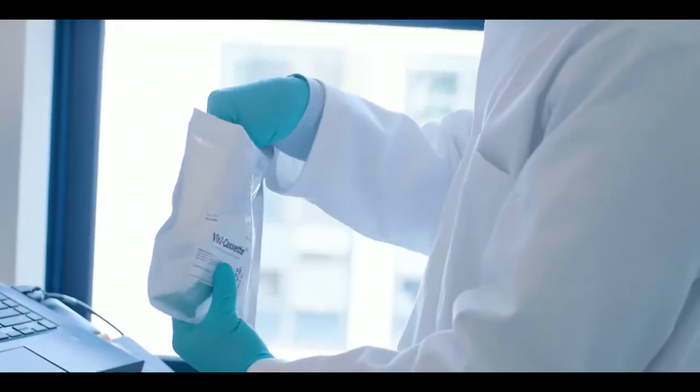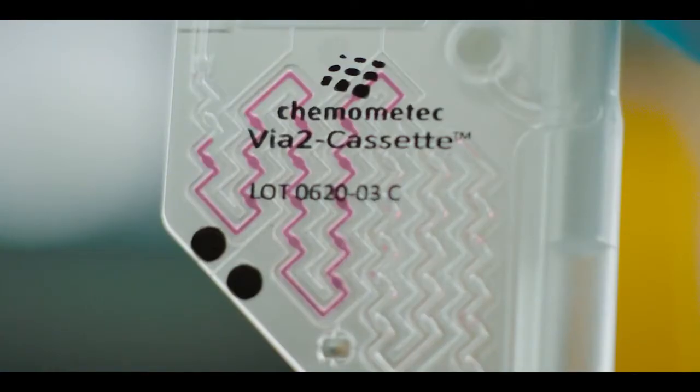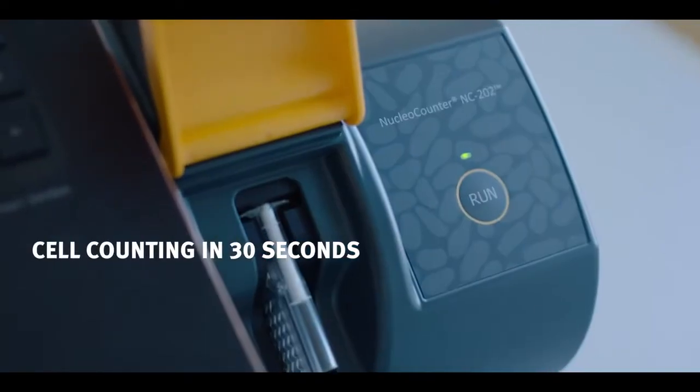The Nucleocounter NC202 can count all mammalian cell types using a single protocol. Cell counting only takes 30 seconds.